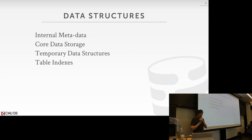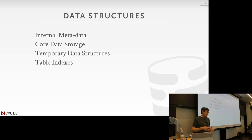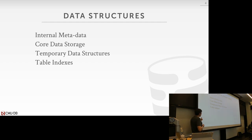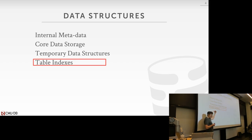Recall from last class, we started talking about different kinds of data structures we could have inside of our database system. We spent the entire lecture talking about hash tables and how data structures in general — but especially hash tables — can be used in a variety of places inside the database system: using it for internal metadata, actually storing the underlying tables, and also temporary data structures like building a hash table to do a join. For the first three uses, the hash table is going to be good enough. It's not very often you're going to need to do range queries; most of the time you just want to do point query lookups for a single key-value pair. The thing we want to talk about now is table indexes, where we may want to run queries that do range scans — and therefore hash tables are insufficient because you can only do single key lookups.